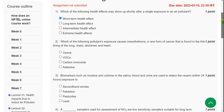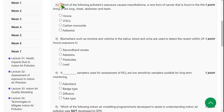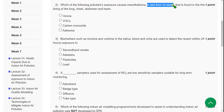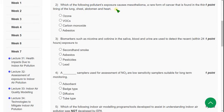Moving on to the second question: Which of the following pollutant's exposure causes mesothelioma, a rare form of cancer that is found in the thin lining of the lung, chest, abdomen, and heart? For the second question, the correct answer is fourth option: asbestos. Due to asbestos pollution, there is a chance to get mesothelioma. So mark fourth option.